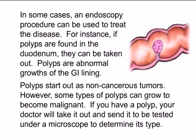In some cases, an endoscopy procedure can be used to treat the disease. For instance, if polyps are found in the duodenum, they can be taken out. Polyps are abnormal growths of the GI lining. Polyps start out as non-cancerous tumors; however, some types of polyps can grow to become malignant. If you have a polyp, your doctor will take it out and send it to be tested under a microscope to determine its type.